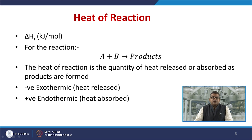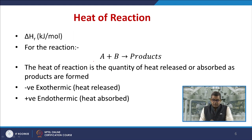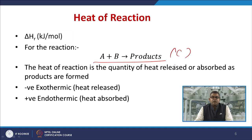Let us look at the heat of reaction — a very common phenomenon covered in chemical thermodynamics. It is usually represented by ΔHᴿ with units of kJ/mol. For a reaction A + B → C, the heat of reaction is the quantity of heat released or absorbed as products form. There are two types: exothermic when heat is released, and endothermic when heat is absorbed.